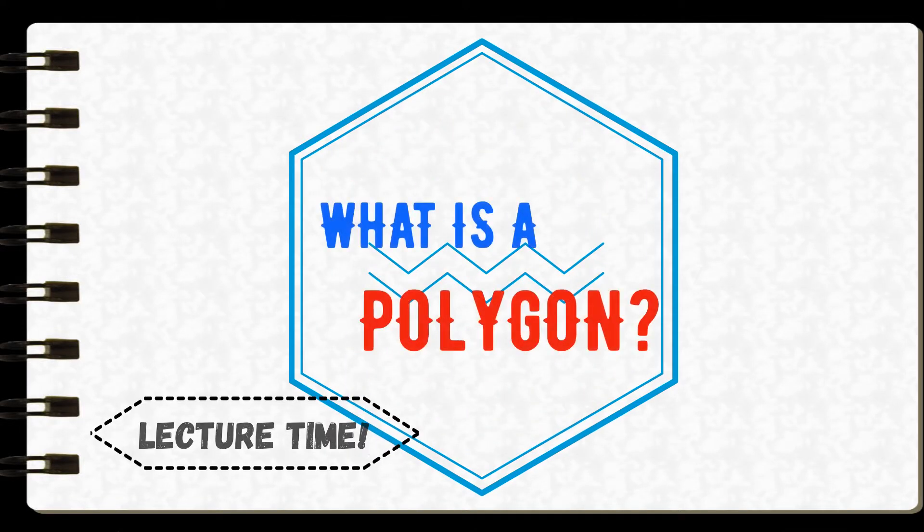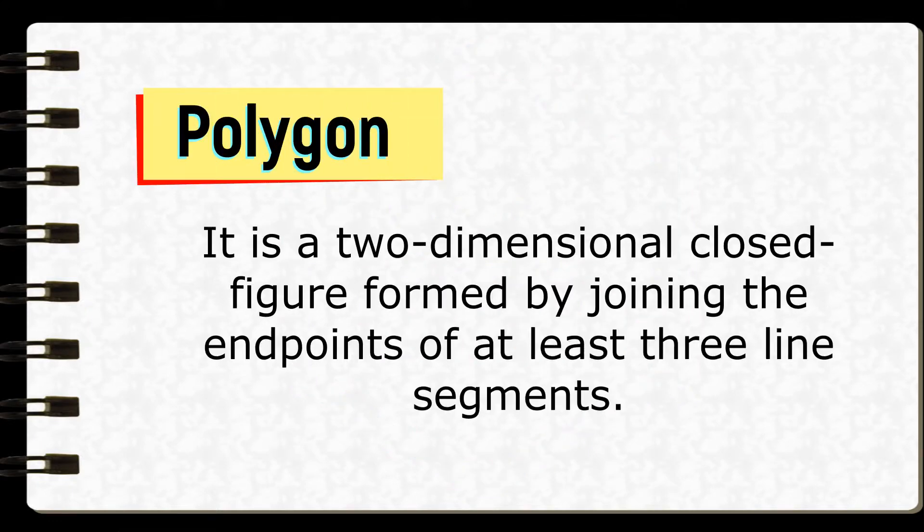So what is a polygon? A polygon is a two-dimensional closed figure formed by joining the endpoints of at least three line segments.